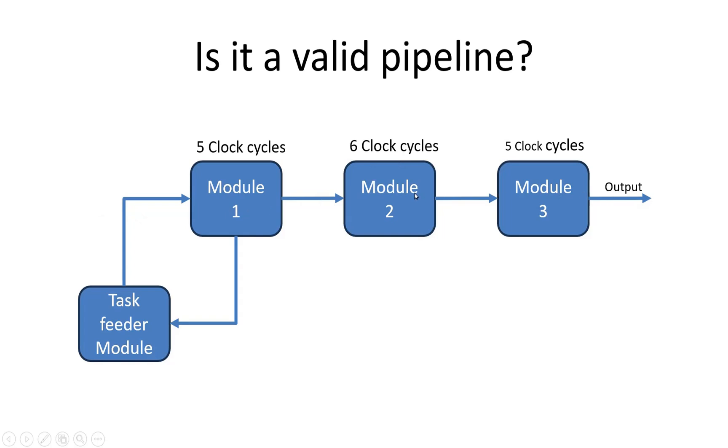In the previous solution, we decided to take the acknowledgment from module 2 instead of module 1. But in that case, the task feeder module could feed input to module 1 only after every 11th clock cycle, and the pipelining was becoming very inefficient.